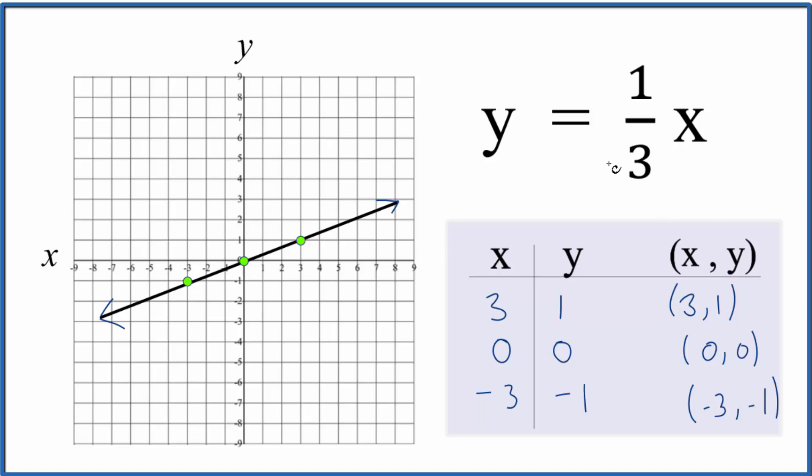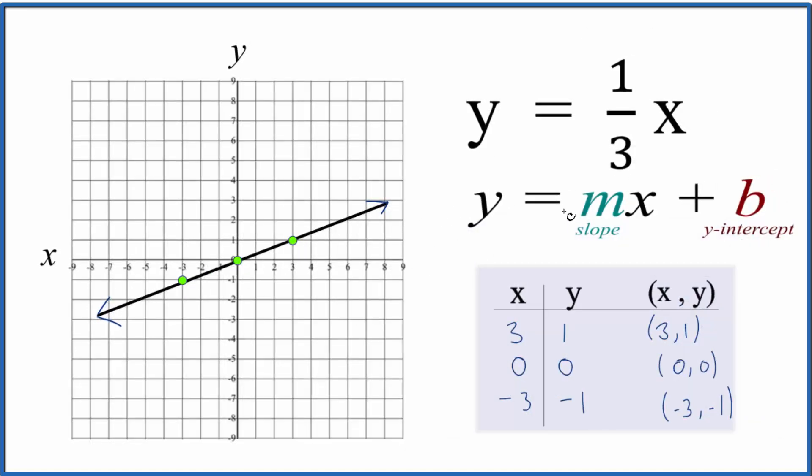Let's check our work with the slope-intercept formula. We have y equals mx plus b. m is the one-third, and we have x, but we don't have a b. What that means is b is 0. So the line intercepts the y-axis at 0.